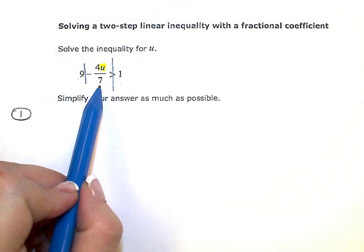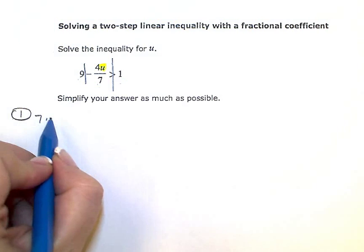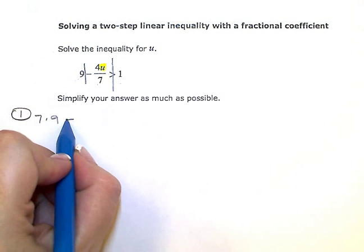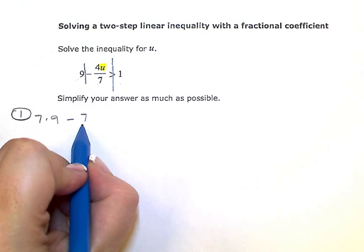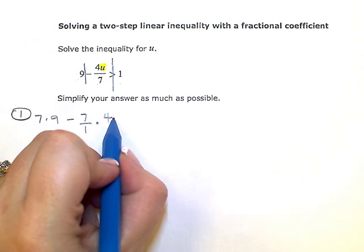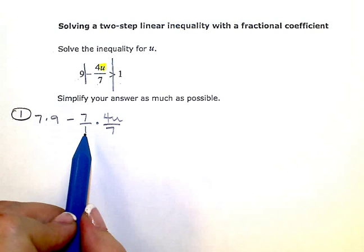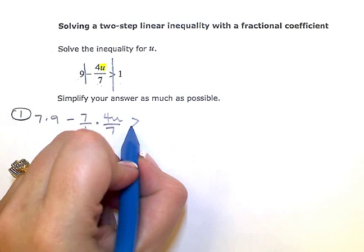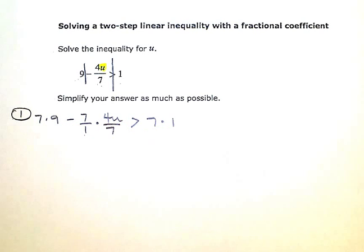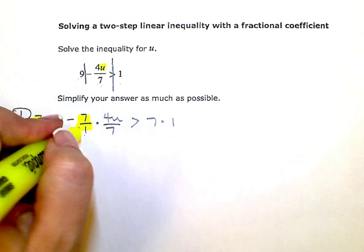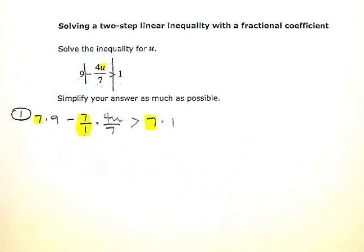Since my denominator is seven, I need to multiply every term on both sides of the inequality by seven. I'm going to have seven times nine as my first term, then minus, and I'm going to put seven over one for this term since I have a fraction just to keep numerators and denominators lined up. So minus seven over one times this term is greater than seven times one on the other side. I multiplied every single term by seven on either side of my equation.